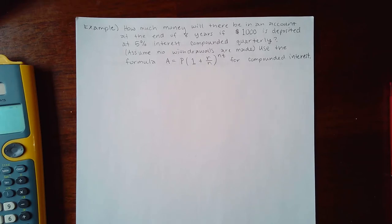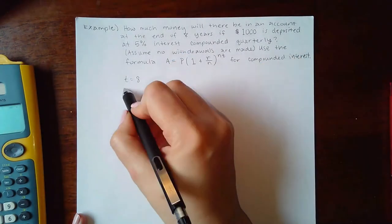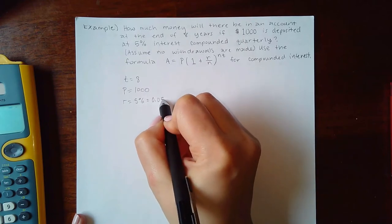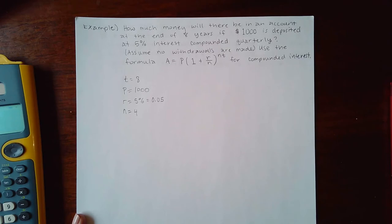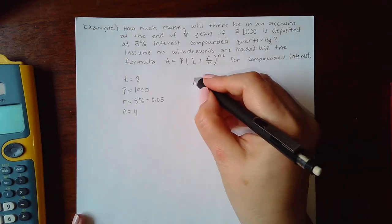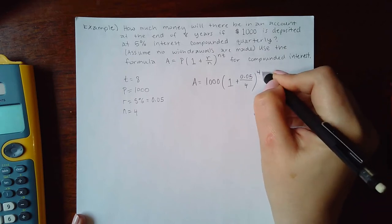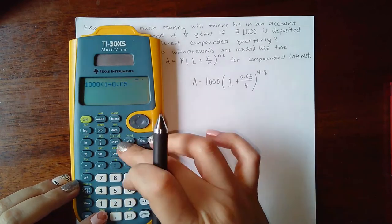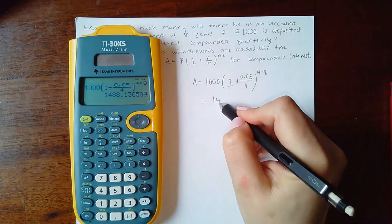This problem asks: how much money will there be in an account at the end of 8 years if $1,000 is deposited at 5% interest compounded quarterly, with no withdrawals? So t equals 8, P equals 1000, r equals 0.05, and n equals 4. Plugging into the formula: 1000 times (1 plus 0.05 over 4) raised to the power of 4 times 8.